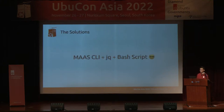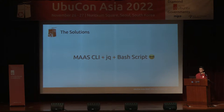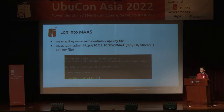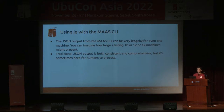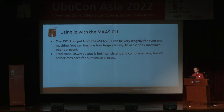The solution I use is the MAAS CLI, JQ, and bash scripts — these are the three technologies I use to install MAAS at scale. First, after installing, you need to log in to MAAS — export the API key, then use the MAAS login command. Make sure you are logged in to the MAAS server. The JSON output from the MAAS CLI can be very long even for one machine. You can imagine how listing 10 or 100 machines would fill your screen. Traditional JSON output is consistent but sometimes hard for humans to read, so that's why I use JQ.